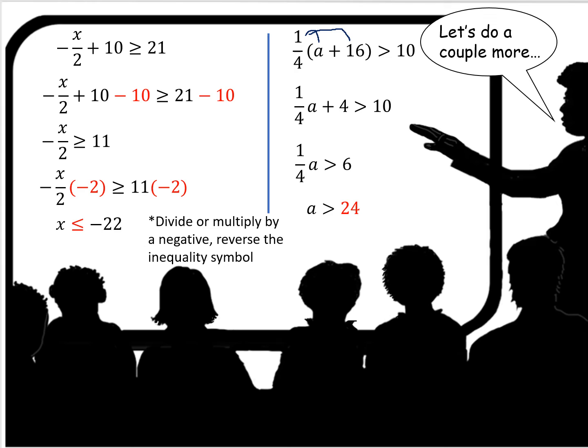1 fourth a is therefore then greater than 6 because we subtracted 4 from both sides. A then is greater than 24. Why? Because we had to multiply both sides by 4 to isolate the variable.